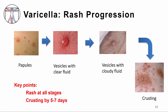This graphic outlines the different stages of the varicella rash. The initial rash begins as discrete erythematous papules, or separate raised red bumps. These then change to vesicles or blisters with clear fluid. As the immune response matures, the vesicles fill with cloudy fluid, which is composed of T cells. Finally, the vesicles burst and crust over by about five to seven days after the first papule appears. A key finding is that the patient will have the rash at various stages on their body all at the same time.